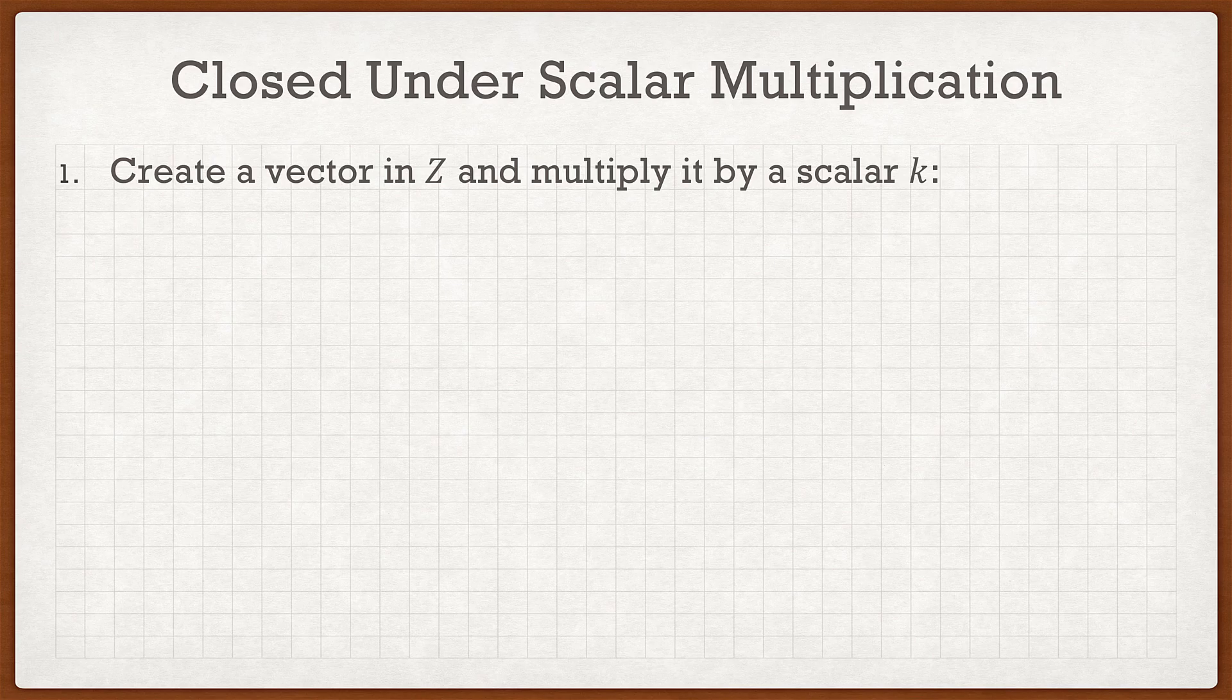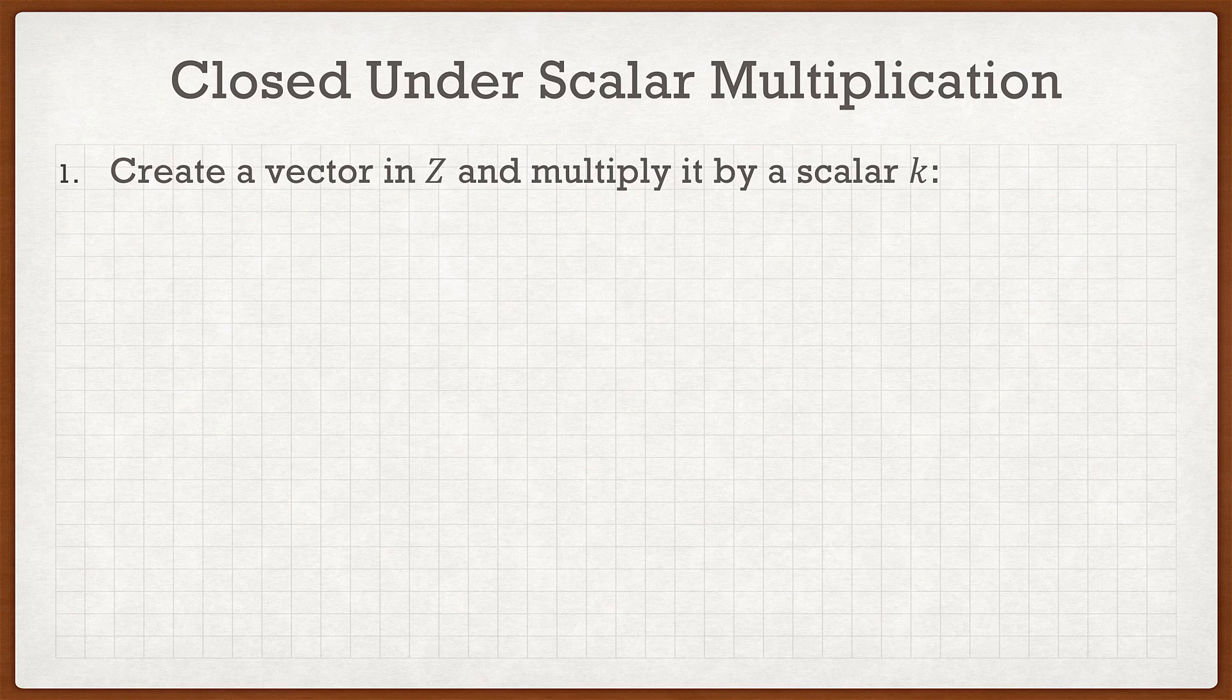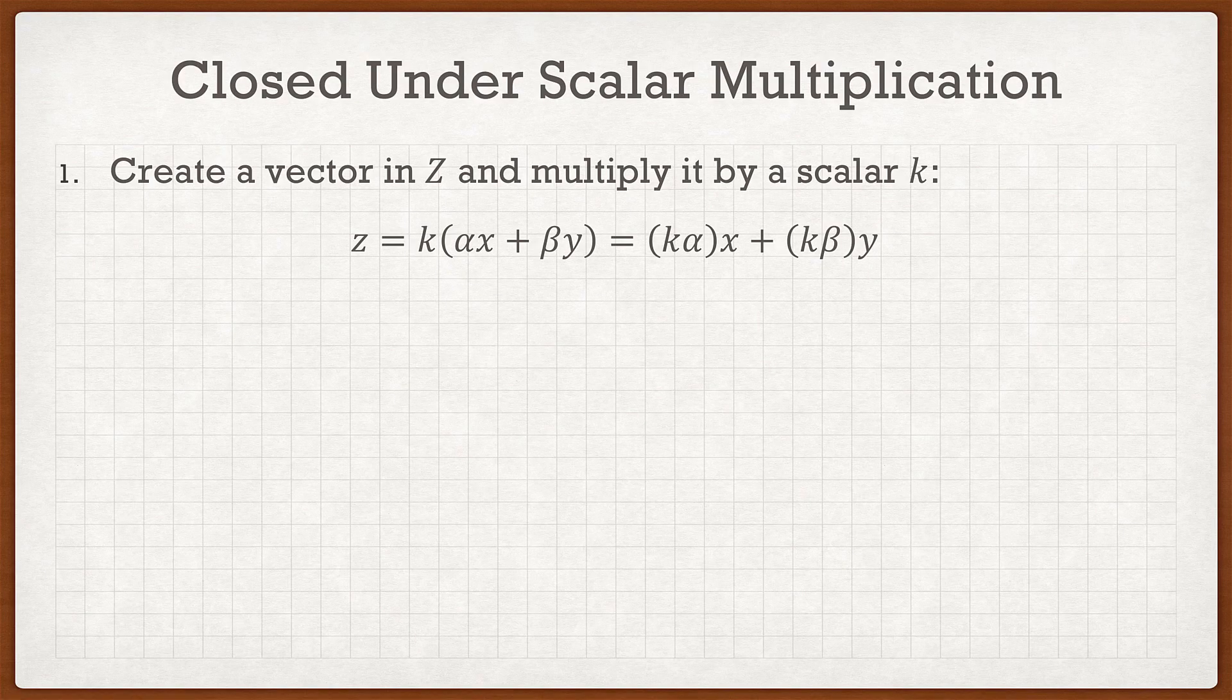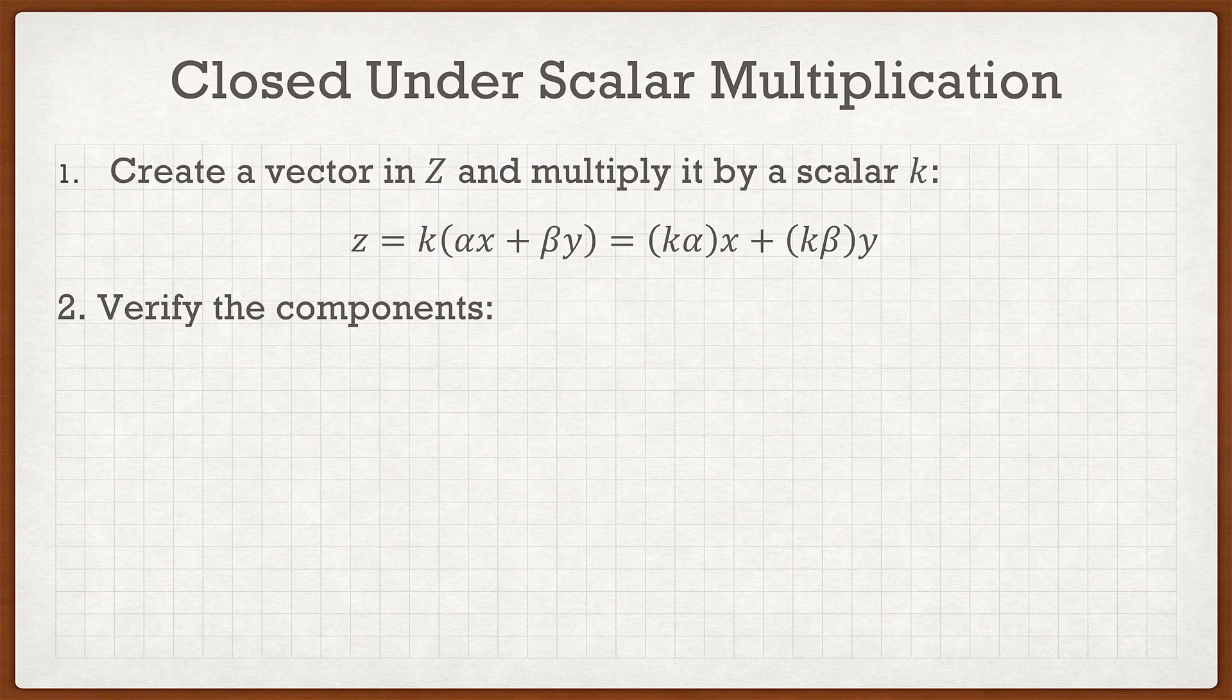So the second one is scalar multiplication. This is easier because for vector addition, well we need two vectors to add together. For scalar multiplication, well all we have to do is throw in a scalar. So now I can say that z is equal to the scalar k times that function, so k times αx plus βy. And in the end I get the same coefficients out in front that are kα and kβy.